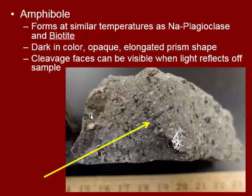Amphibole is the next step down, and we have this kind of intermediate type of rock. It looks very similar to pyroxene, but the difference is the shape it takes when it crystallizes. It's dark black in color, but instead of having a boxy shape, it actually has more of an elongated blade-like shape — very thin and long, more of a prism shape. And again, because it has cleavage, if it's broken just the right way, you can see the light reflecting off of it, as shown with the arrow in the picture.